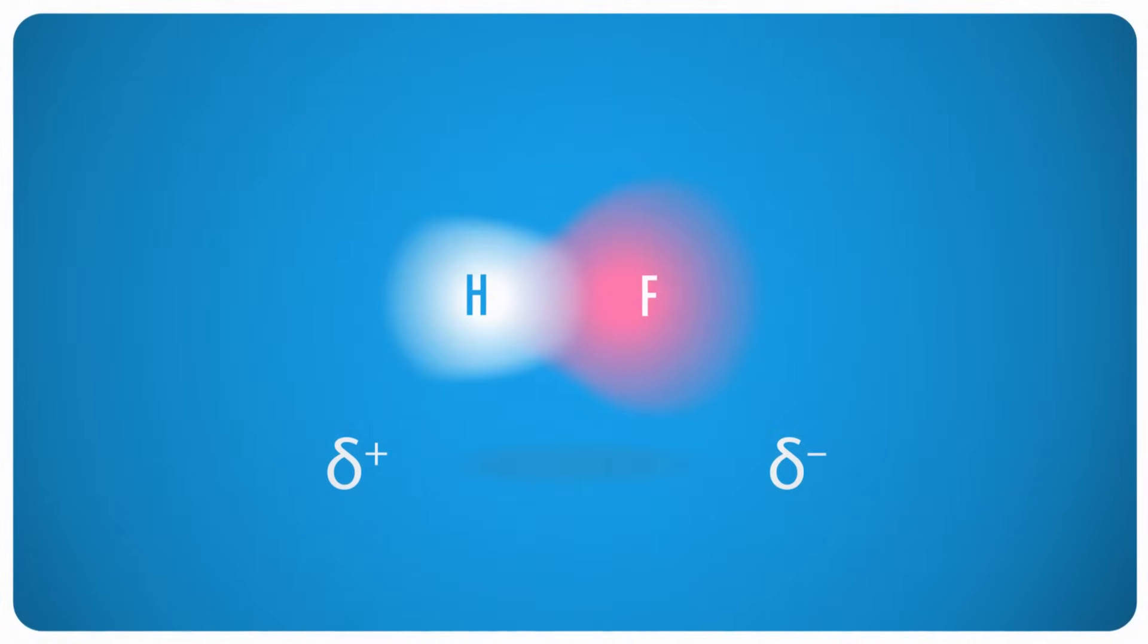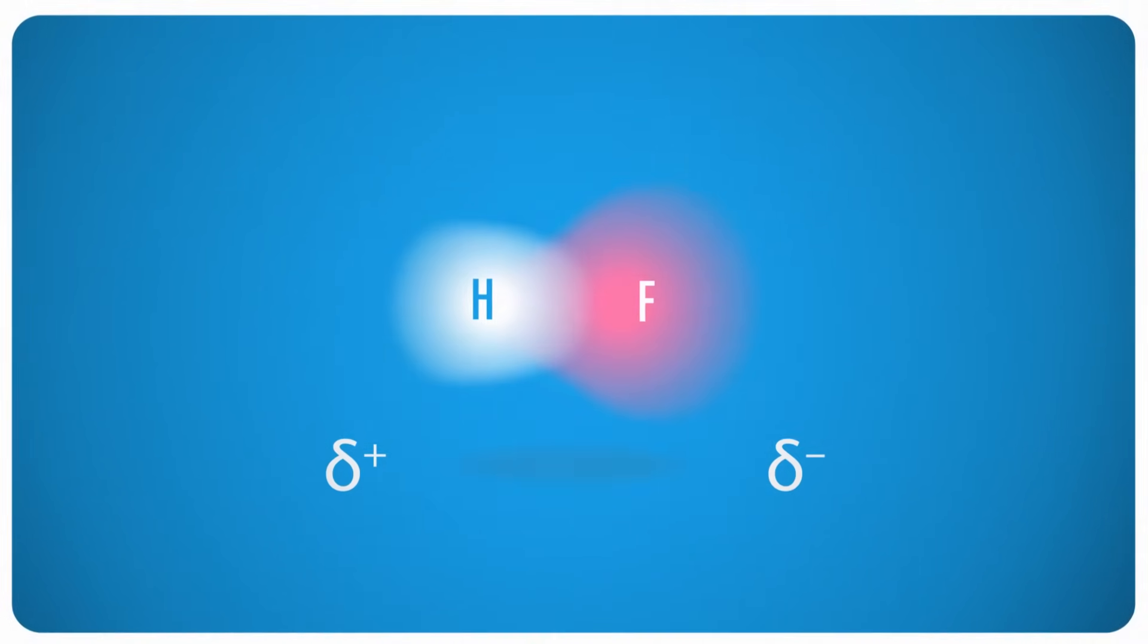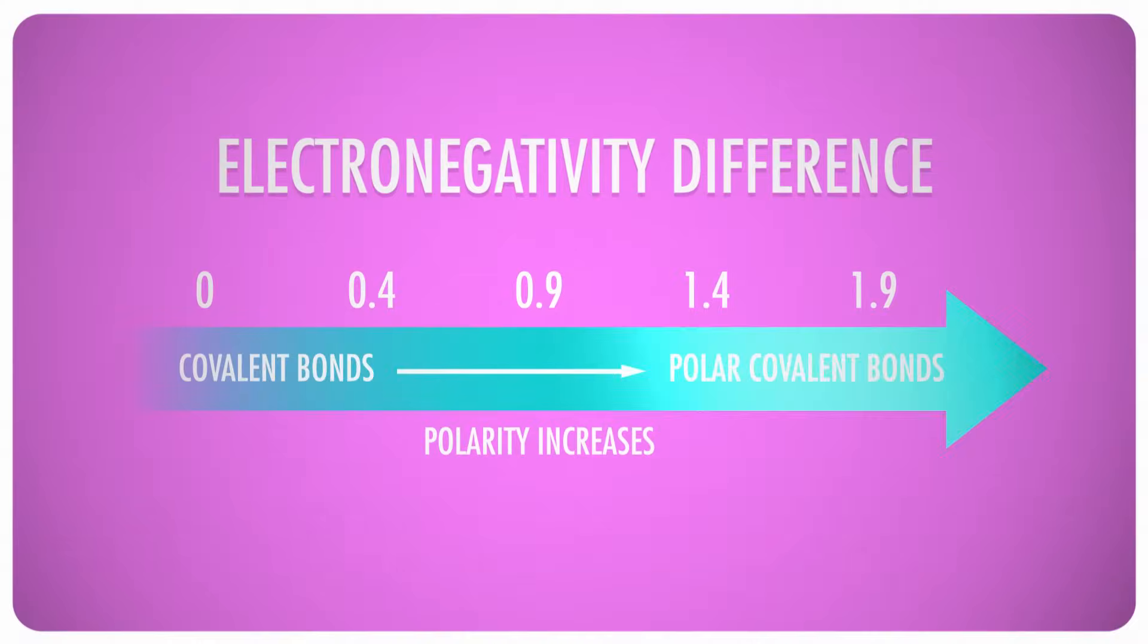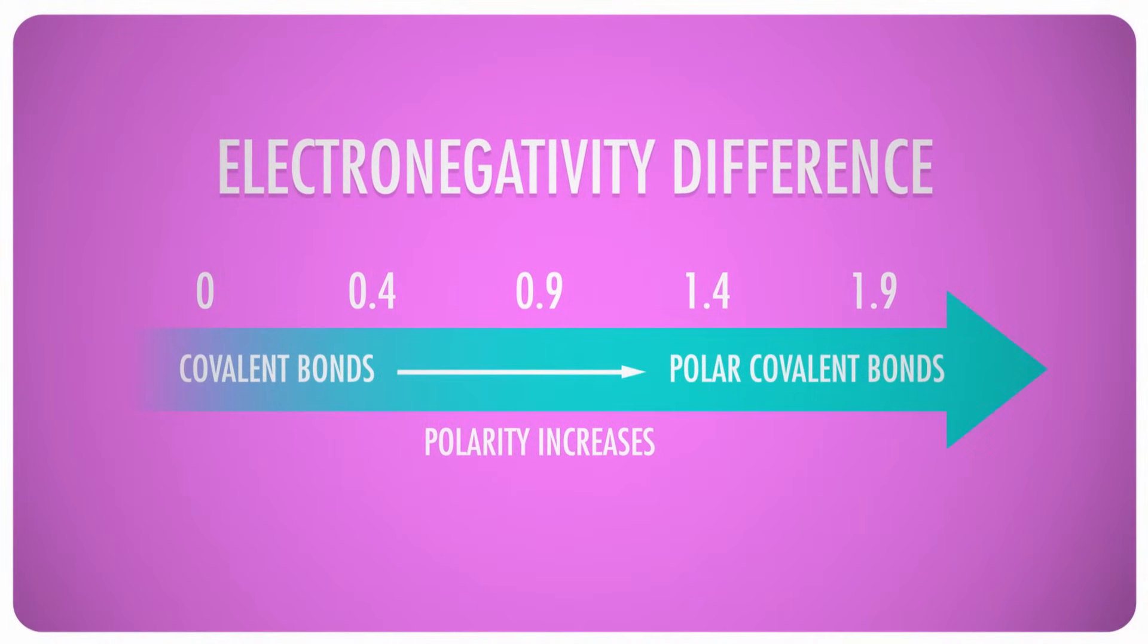The result is a partially negative charge on the more electronegative part of the molecule, and a partially positive charge on the less electronegative side. Now in extreme cases, like if the electronegativity is greater than 1.6, then we end up with two ions in the same molecule. This isn't what we're talking about here when we talk about polar molecules. We're talking about differences between 0.5 and 1.6.